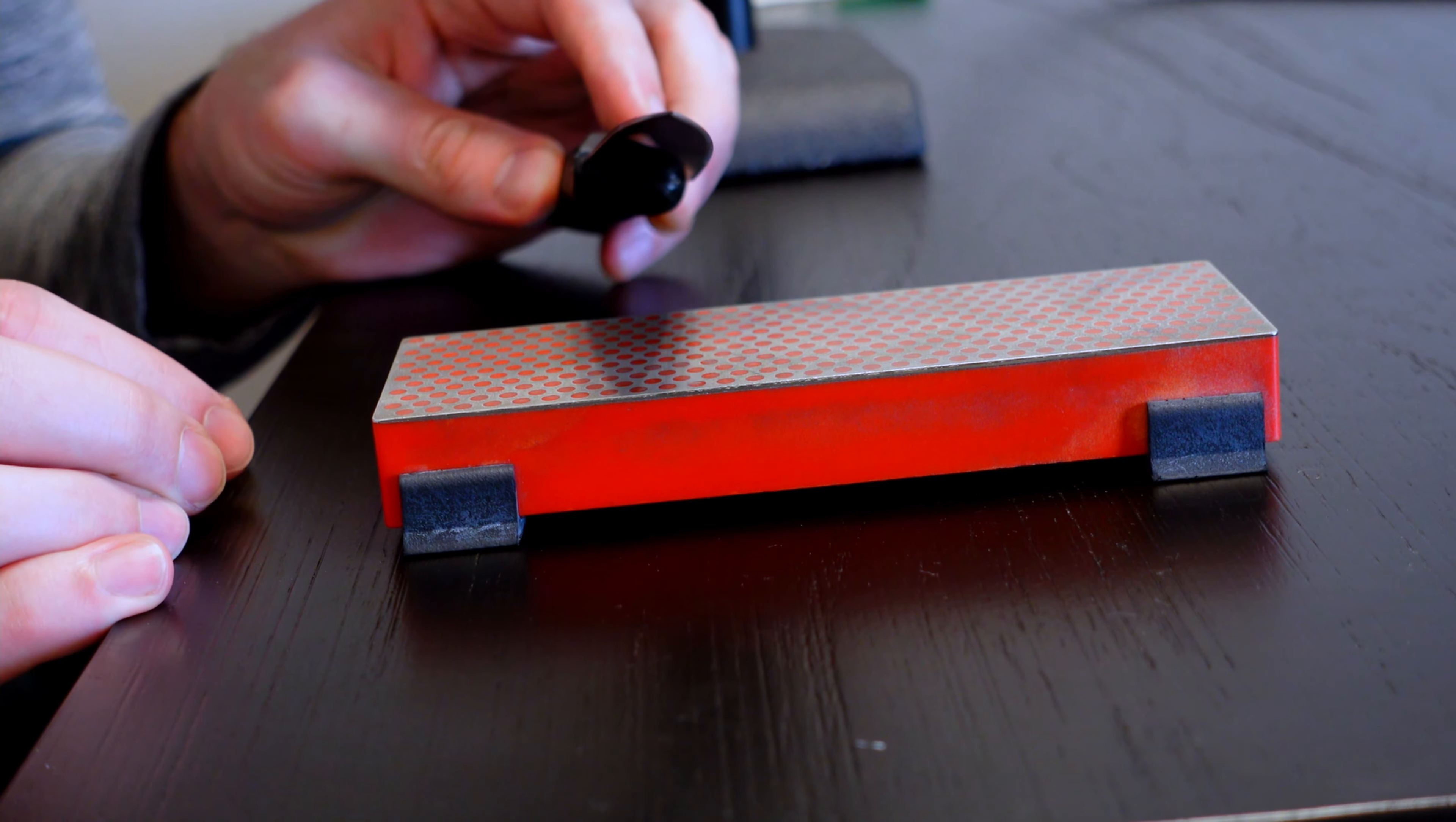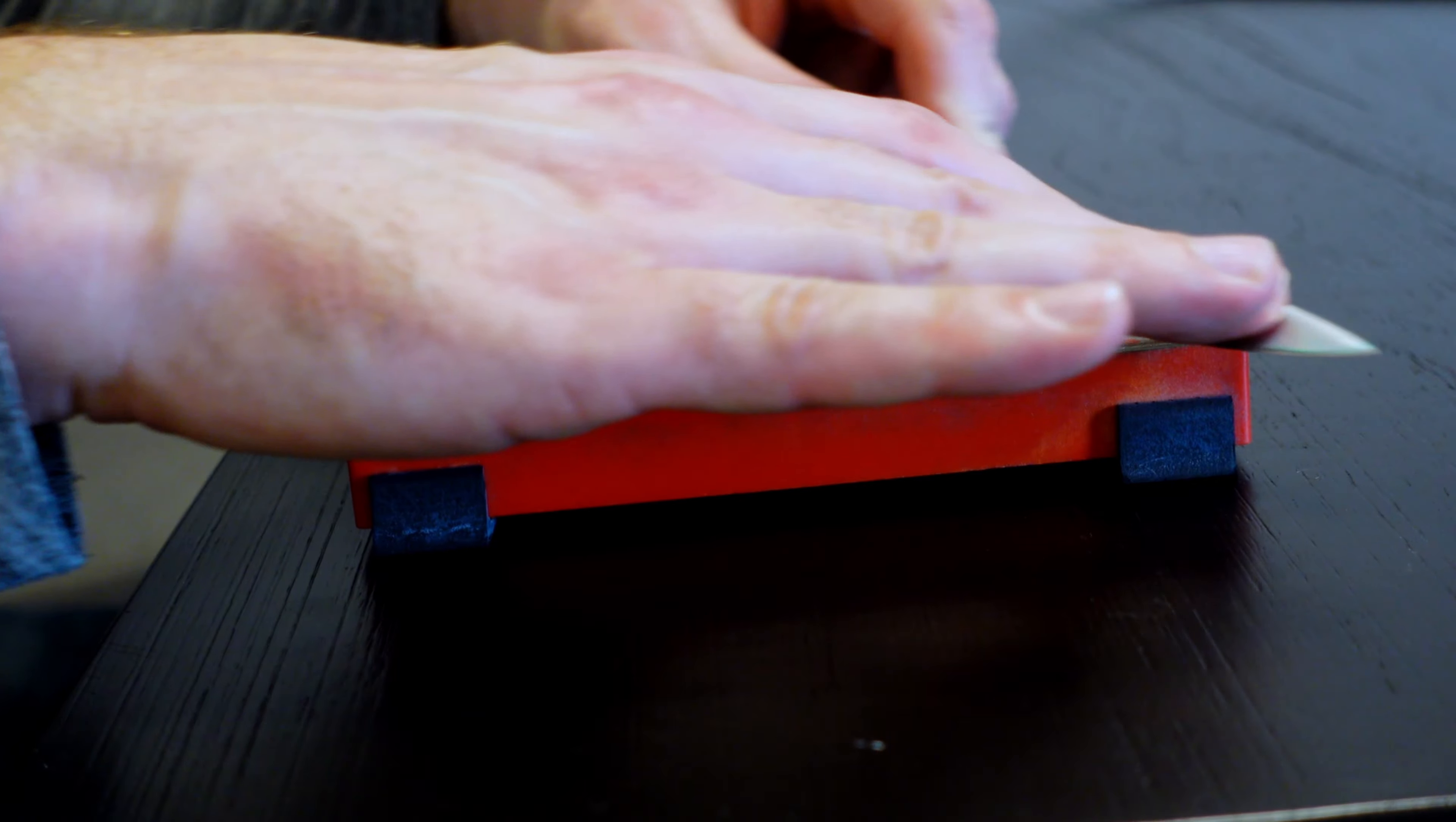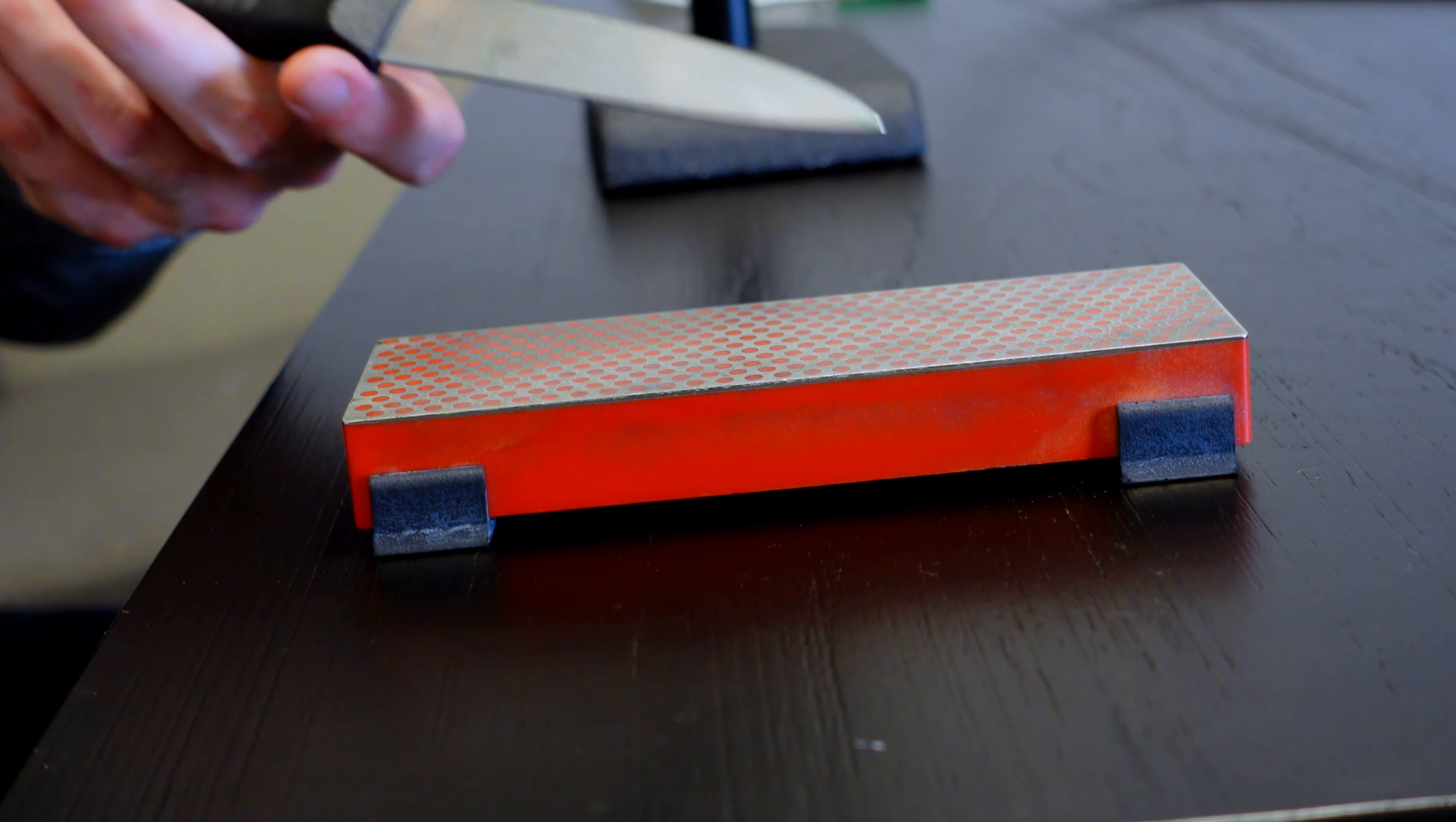If you removed all the Sharpie, then you have the right angle. Then you can do the same thing going the opposite direction. Start with the knife down, pull it up a little bit, slide it across the stone, steepen it until it stops, back it off a little bit. Use that angle and then check and see if the Sharpie is fully taken off the knife edge. And if it is, you've hit the factory edge.